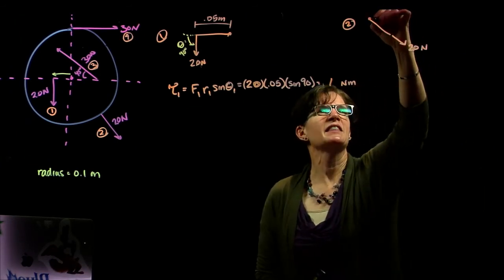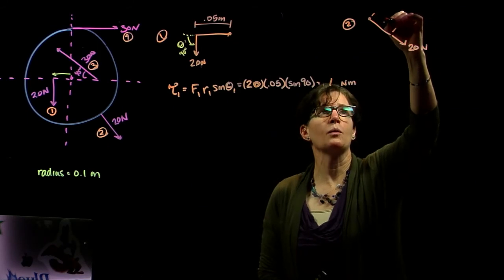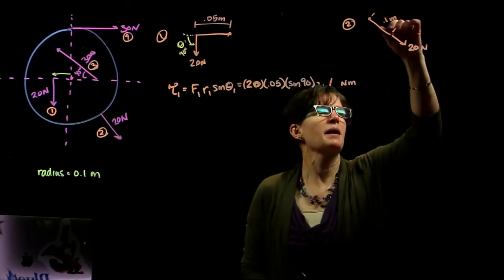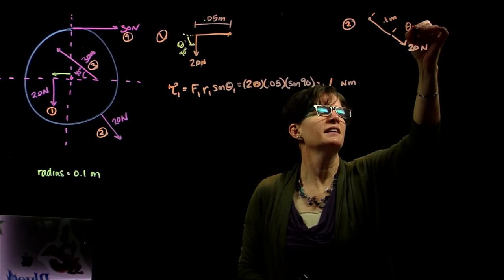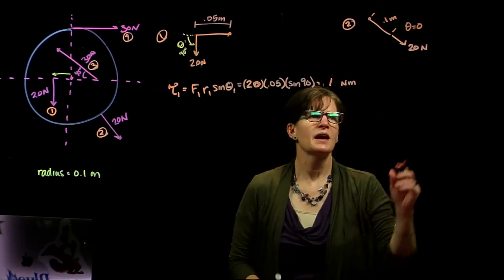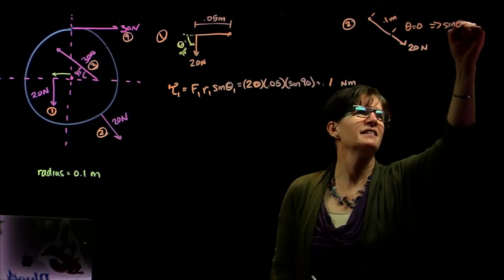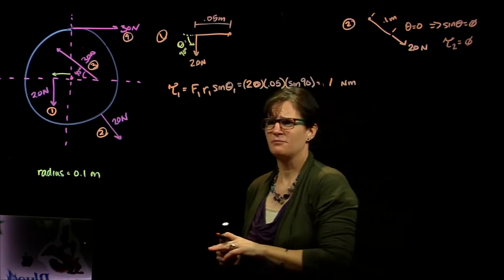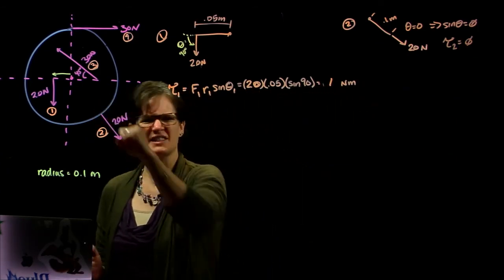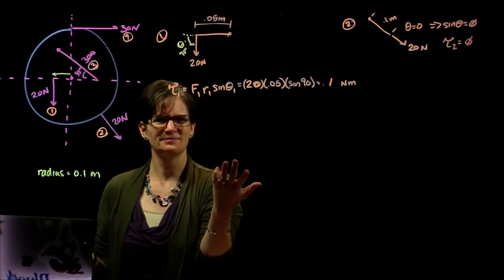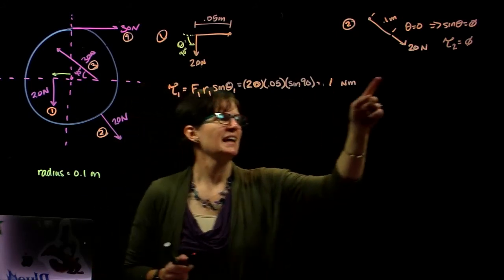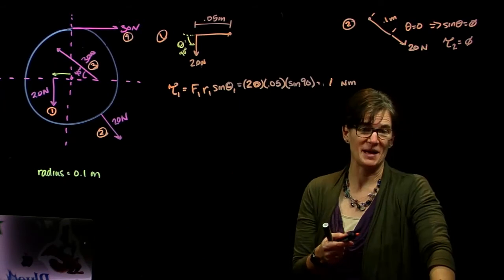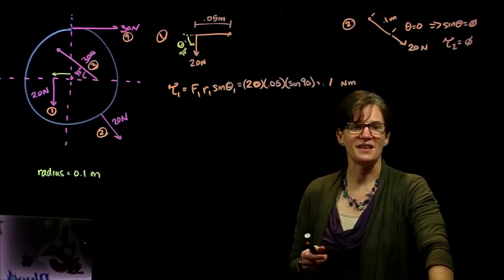Okay, so in this case my radius would be 0.1 meters. It does act at the full radius of the disc. And my angle, theta is equal to zero. And this means that the sine of theta is equal to zero. So the torque by force two has to equal zero. This force, if I pull on the disc in this direction, that force isn't going to rotate it. So intuitively I know it's not going to rotate it, and it doesn't rotate it because of that angle. Remember, it's not just about where the force is applied, but that angle at which it's applied will or will not induce a torque.